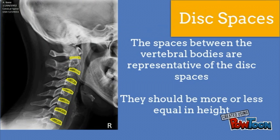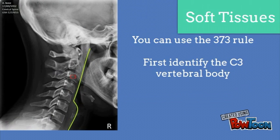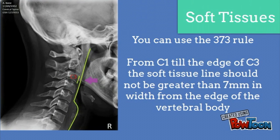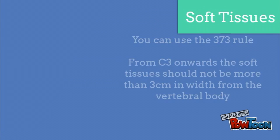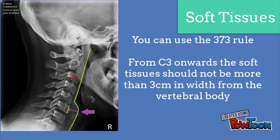Disc spaces: the spaces between the vertebral bodies are representative of the disc spaces and should be more or less equal in height. Soft tissues — use the 7-3-3 rule. First, identify the C3 body. From C1 till the edge of C3, the soft tissues should not be greater than 7mm in width. From C3 onwards, the soft tissues should not be more than 3cm in width. An increase in soft tissue width could signify a hematoma due to a fracture that may not be visible on the x-ray.